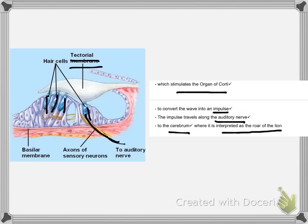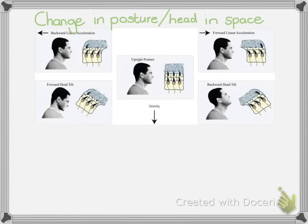Now let's move on to how you would explain a change in position of the head. When we speak about a change in position or posture of the head in space, we are talking about the utriculus and the sacculus — keeping in mind that you have two: one horizontal and one vertical. This diagram illustrates what's happening inside those structures depending on the position of the head or posture of the body.